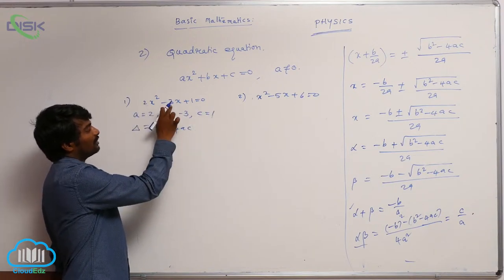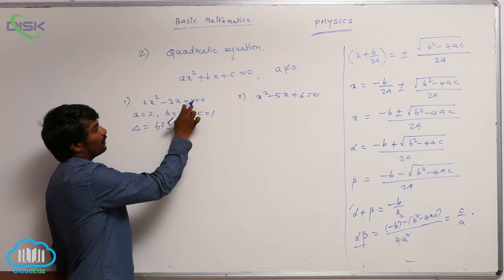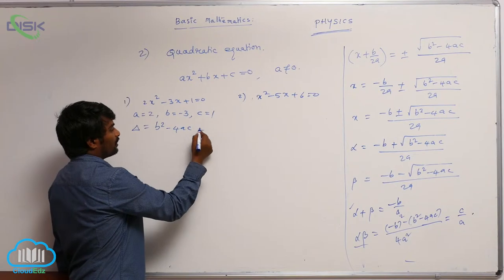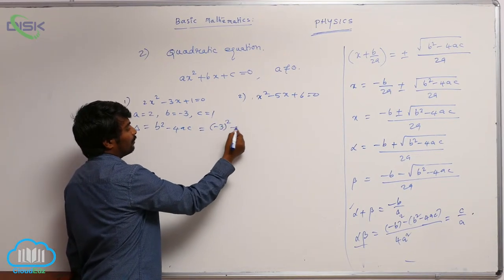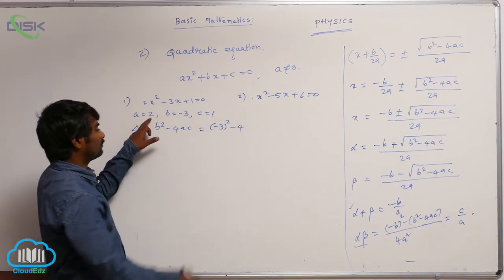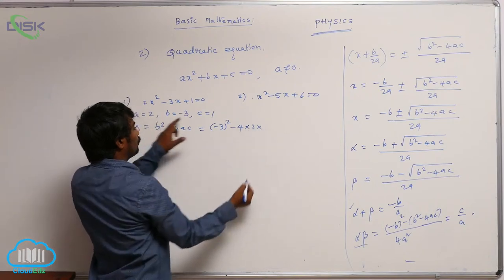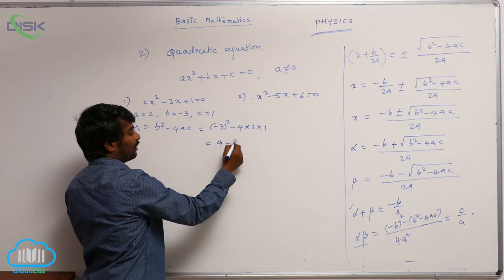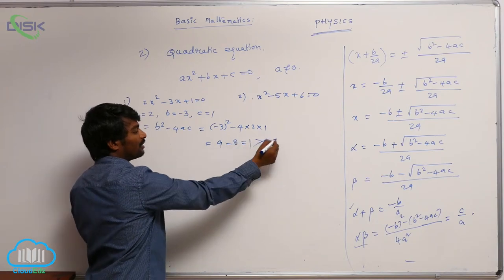This minus 3 is b, c is 1. You compare with this equation. So b square minus 3 whole square minus 4a, 2c, 1. So 9 minus 8 is equal to 1, this is greater than 0.